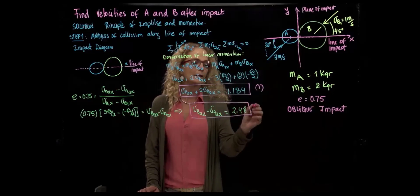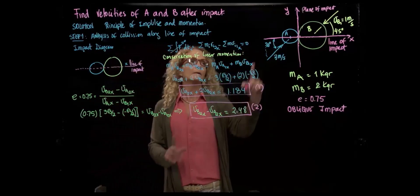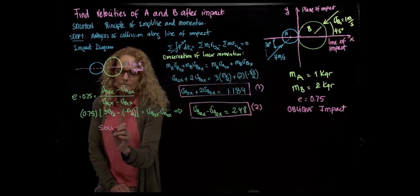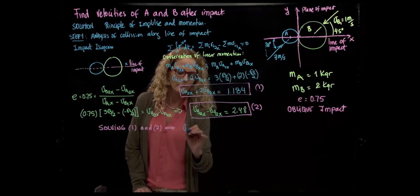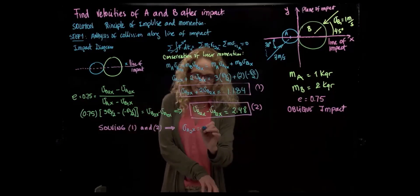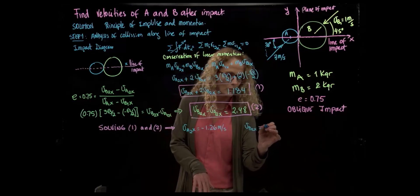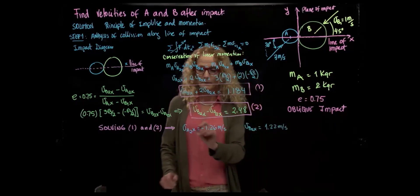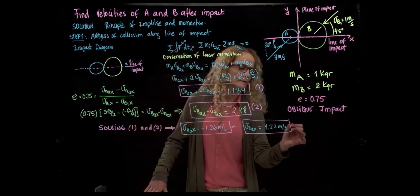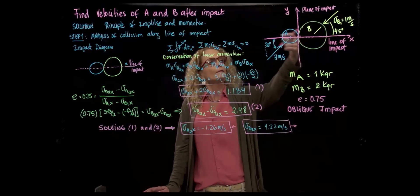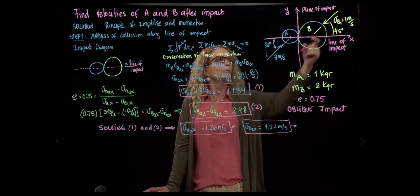With these two equations, we can find the two x-direction components. Solving equations 1 and 2 together: velocity A2x equals negative 1.26 meters per second, and velocity B2x equals 1.22 meters per second. The negative value means disk A bounces back against the x direction after the collision, while disk B moves forward in the x direction.